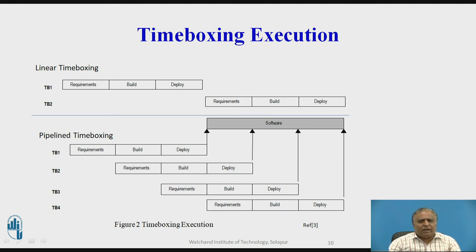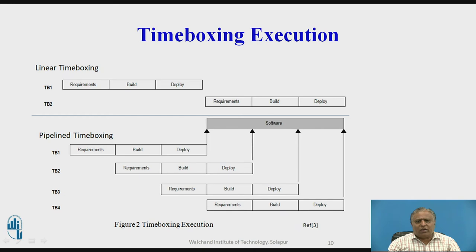In linear time boxing, in the first framework TB1, we perform the activities: requirements, analysis, building, and deployment. After completing TB1, we start the second activity TB2 — gathering requirements, building the software, and deploying it. In the build phase, designing and coding are done. So in linear time boxing, after finishing the work of time box one, we start the work of time box two sequentially.